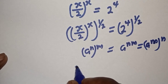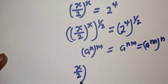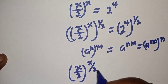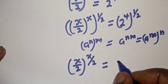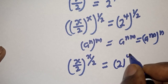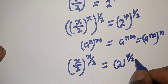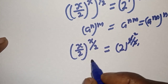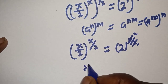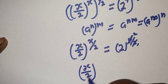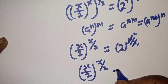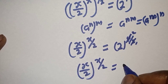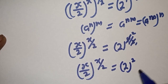So, this can be written as s over 2 to the power of s over 2 is equal to 2 raised to the power of 4 over 2. Then we have s over 2 to the power of s over 2 is equal to 2 raised to the power of 2.